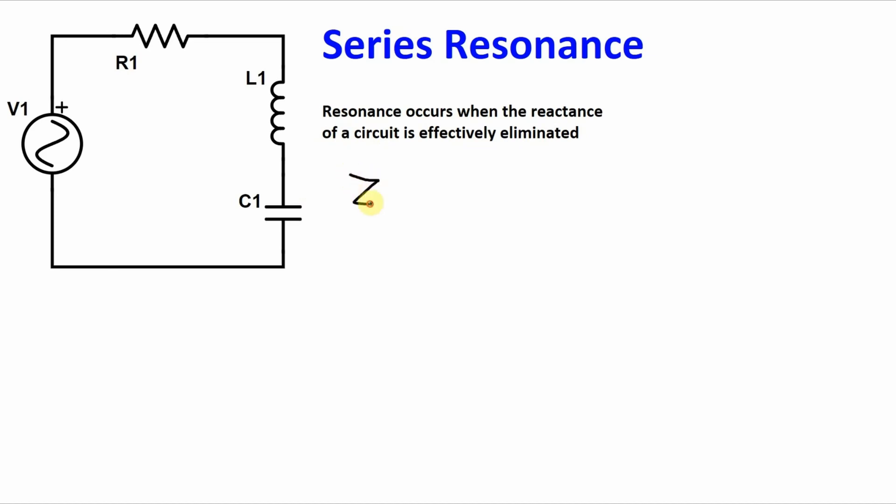In this particular circuit, the total impedance is equal to the real part of the impedance, which is just the resistor, plus the reactive part of the impedance, the imaginary part, which is based on the inductor and the capacitor. So that's going to be JXL minus JXC. And we can combine these two terms into one.